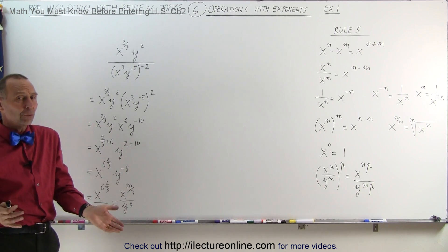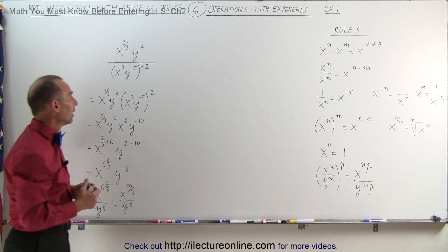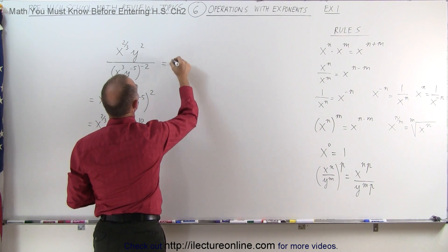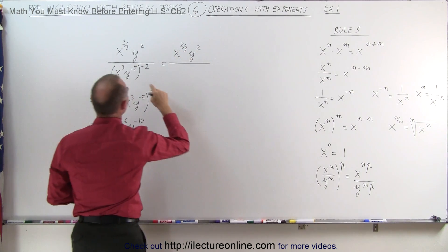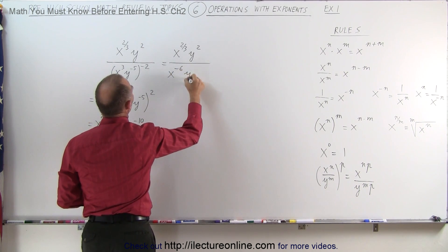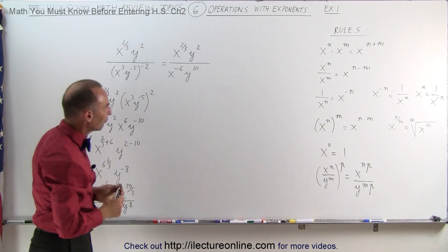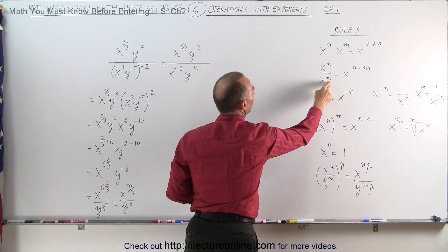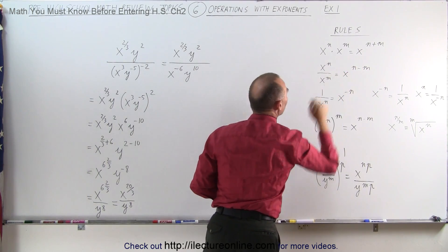I said I could do it another way — there are probably multiple ways this can be done. Instead of moving the negative exponent to the numerator, I can simply multiply as is. So this can be written as x to the two-thirds times y to the second power divided by — using the rule of multiplying exponents — x to the minus 6 power and y to the positive 10 power. Notice I now have something in the form where x to the n divided by x to the n equals x to the n minus m: top exponent minus bottom exponent.